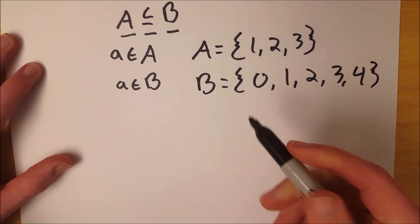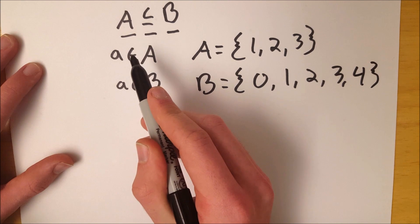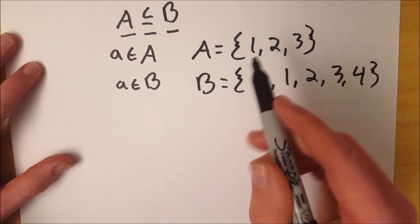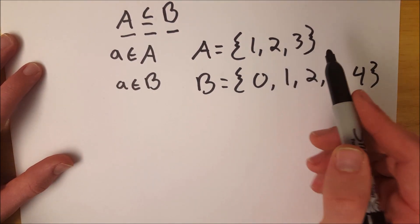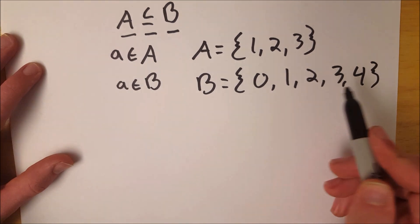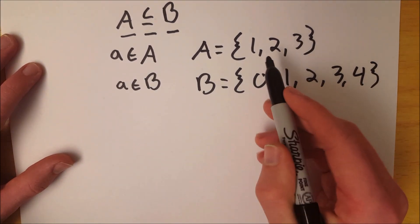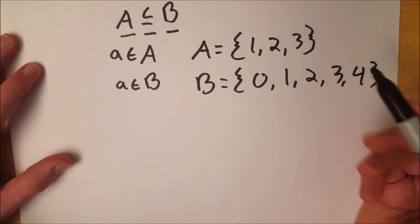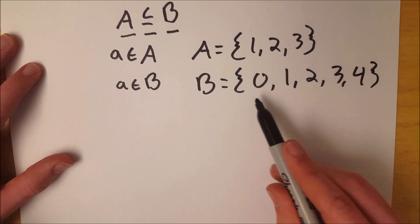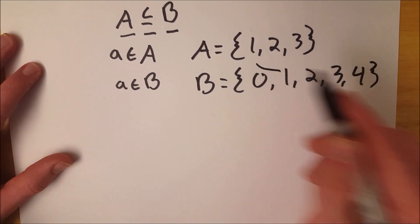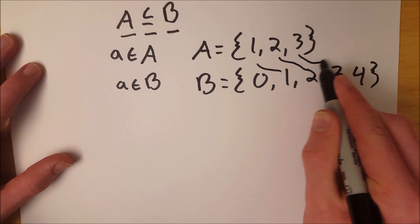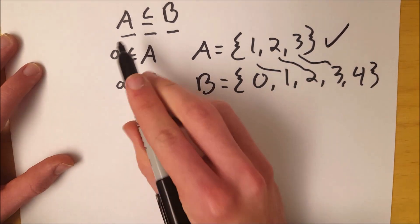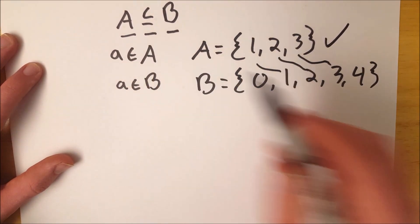The rule is: for any element of A, it must also be an element of B, which means every element in A must also be present in B. In this case, A has 1, 2, and 3. B has 0, 1, 2, and 3. So, check — A is indeed a subset of B.